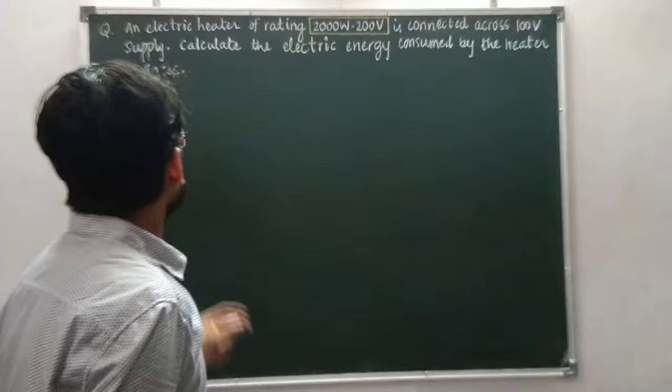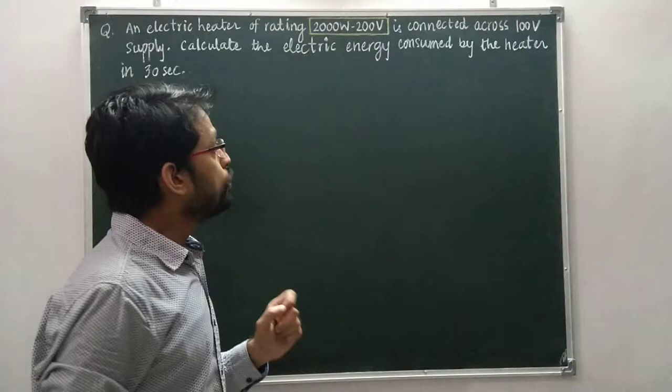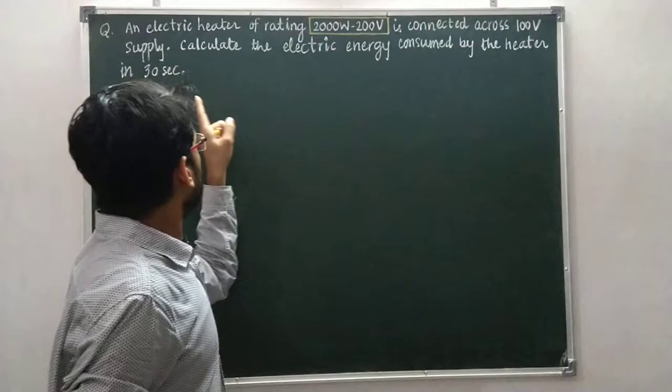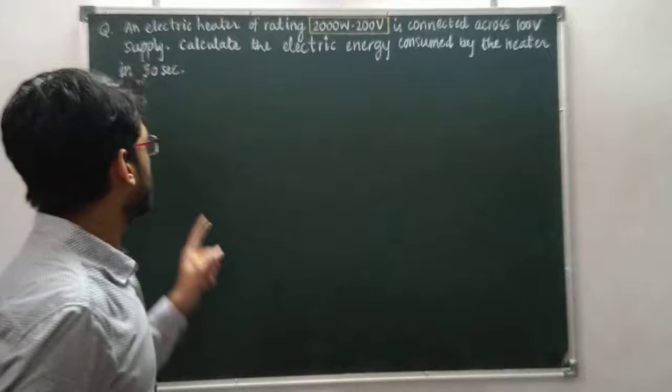Now, consider this question: an electrical heater rated 2000 Watt and 200 V is connected across a 100 V supply. Calculate the electric energy consumed by the heater in 30 seconds.